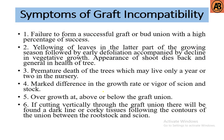There are some symptoms of graft incompatibility: failure to form a successful graft or bud union with a high percentage of success; yellowing of leaves in the latter part of the growing season followed by early defoliation; premature death of trees which may live only a year; marked difference in growth rate or vigor between scion and stock; overgrowth at above or below the graft union; and if cutting vertically through the graft union, a dark line or corky tissues following the contours of the union between rootstock and scion.